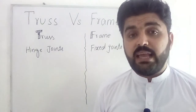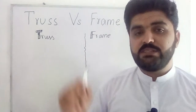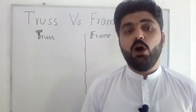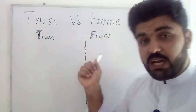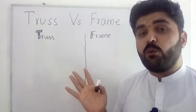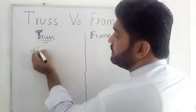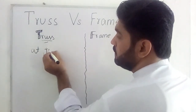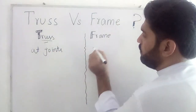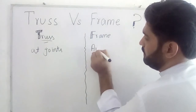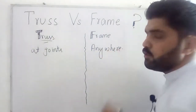The second main difference between truss and frame is that the truss will only be subjected to forces at a joint, while the frame structure can be subjected to force anywhere. So the truss is only subjected to forces at joints while the frame structure can be subjected to force anywhere. This is the second difference between the truss and the frame.